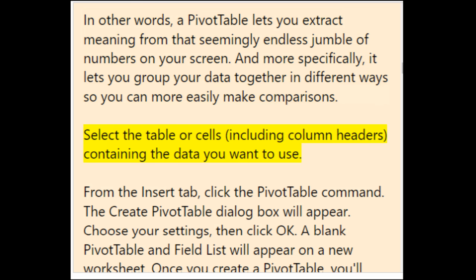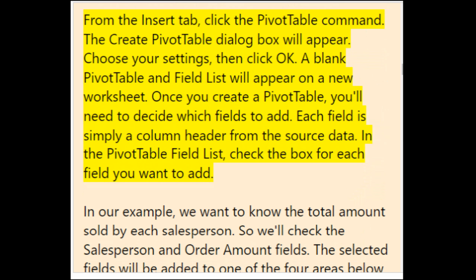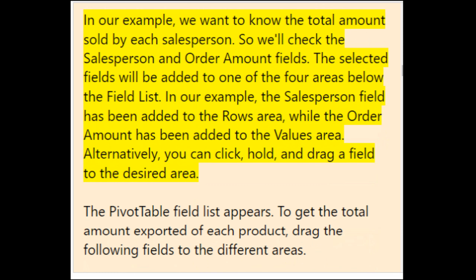To create a pivot table, select the table or cells including column headers containing the data you want to use. From the Insert tab, click the PivotTable command. The Create PivotTable dialog box will appear — choose your settings, then click OK. A blank pivot table and field list will appear on a new worksheet. Check the box for each field you want to add; in this example, check the Salesperson and Order Amount fields.